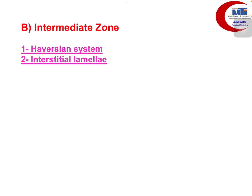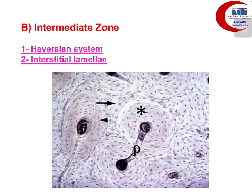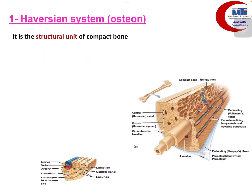The intermediate zone is formed of Haversian systems, and in between the Haversian systems lie the interstitial lamellae. In this transverse section of compact bone, we can see circular structures called Haversian systems, and in between these circular structures lie regularly arranged bone lamellae called interstitial lamellae.